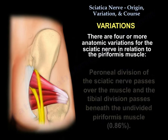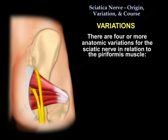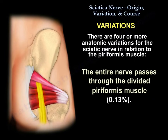Another pattern, which is rare — less than 1% — has the peroneal division of the sciatic nerve passing over the muscle, while the tibial division passes beneath the undivided piriformis muscle. The last pattern, which is extremely rare, has the entire nerve passing through the divided piriformis muscle.